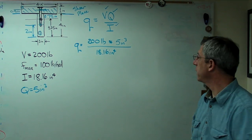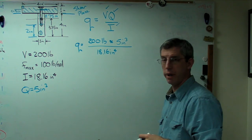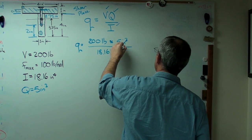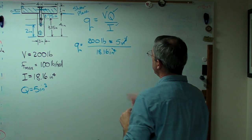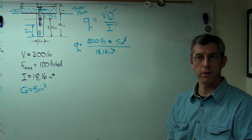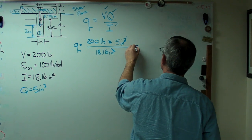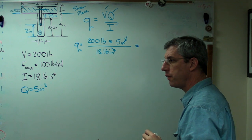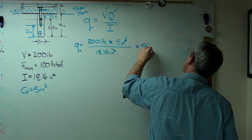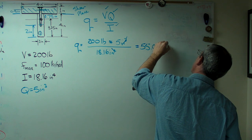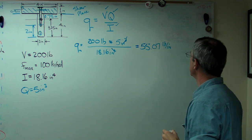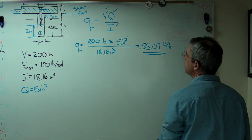So let's just do a quick sanity check and check our units. Inches cubed divided by inches to the fourth is going to give me just inches. So I can cross that out. I'm going to get pounds per inch. Pounds per inch in this case is the correct unit for shear flow. So if you go ahead and figure that out, you get 55.07 pounds per inch. So that's the shear flow.